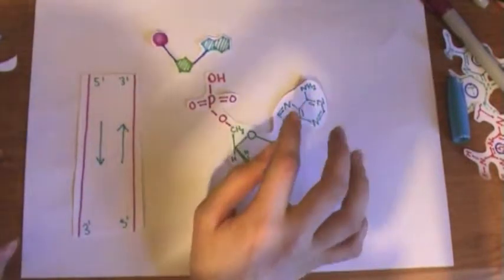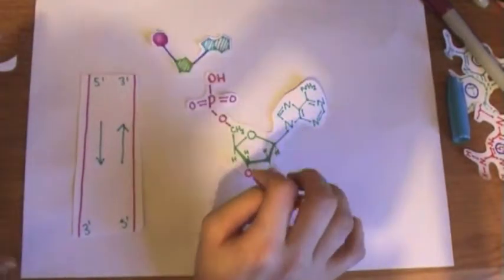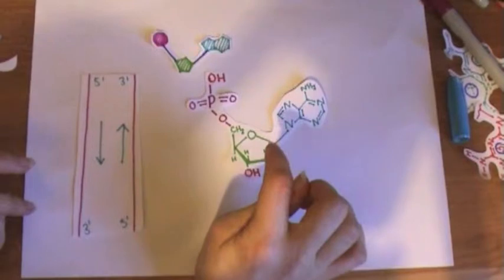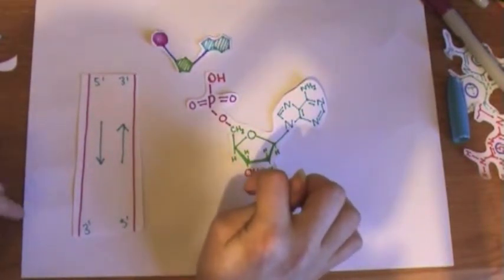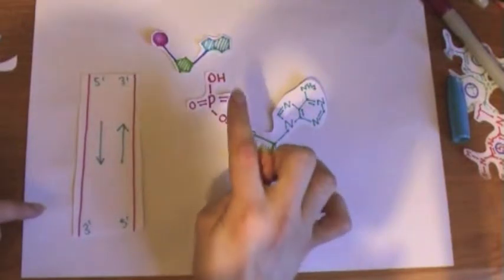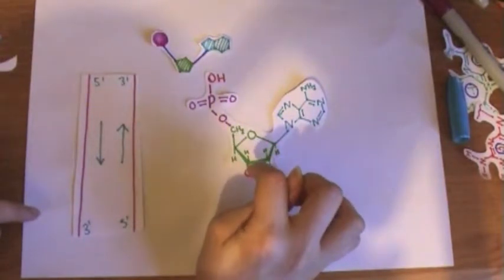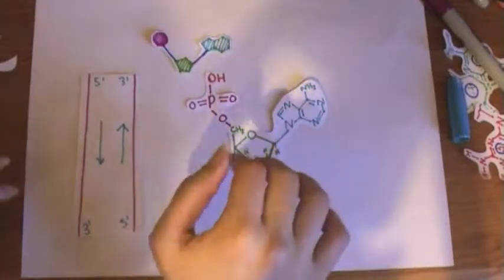And DNA, it's really important because in DNA synthesis or DNA replication, new nucleotides can only be added to the 3' end, to this end. So DNA chains always grow in the 5' to 3' direction.